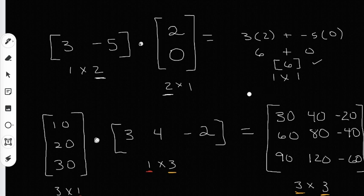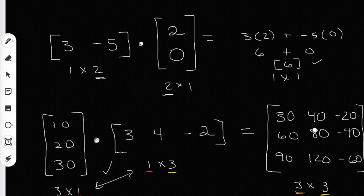Multiplying a row by a column gets easier once you learn how to do it and do more practice problems. What I've noticed though is that sometimes you have the column coming first. For this one at the bottom I have the column by the row. Because this is a 3 by 1 and this is a 1 by 3, the inside numbers — the 1s — are going to match up, which means I can multiply these. But the result is going to be a 3 by 3, so I'm going to have a matrix with 3 rows and 3 columns. This is column by row, and you can see the answers are completely different in terms of dimensions compared to row by column.